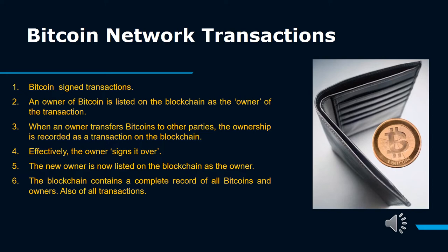An owner of Bitcoin is listed on the blockchain as the owner of the transaction. When an owner transfers Bitcoins to other parties, the ownership is recorded as a transaction on the blockchain. Effectively, the owner signs it over. The new owner is now listed on the blockchain as the owner. The blockchain contains a complete record of all Bitcoins, owners, and also all transactions.